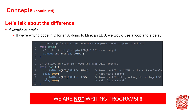Let's talk about the difference between those two concepts. If we were writing code in C for an Arduino to blink an LED, we would use a loop that included delays. Here you can see the blink sketch for an Arduino. We have some setup that runs as power comes onto the board and initializes things. Then it jumps into a loop where we do a digital write to turn the LED high, delay for a thousand milliseconds, write again to turn the LED off, delay for another thousand milliseconds, and then loop around again. This is how you write code in C to blink a light.